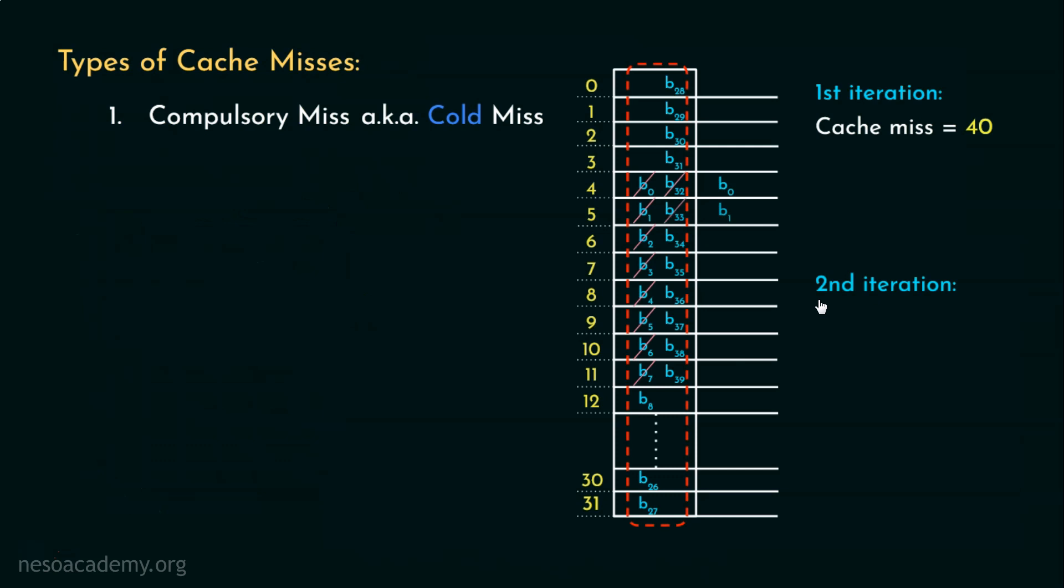I hope you remember the second iteration as well. During the second iteration, we actually encountered 16 misses. These are known as conflict misses.